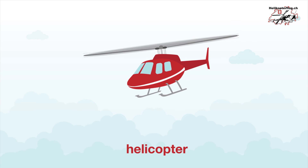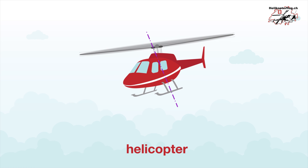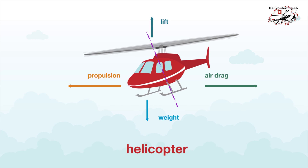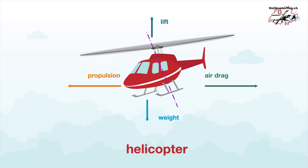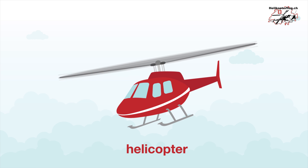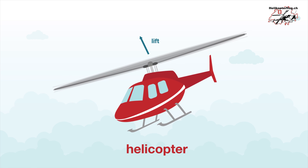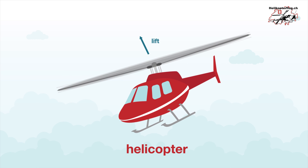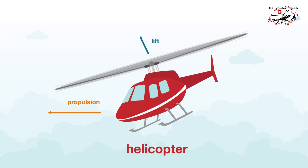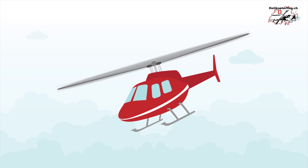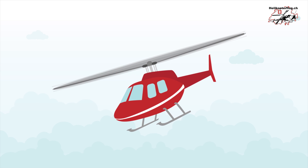To fly forwards, the rotor plane is tilted forward so that the airflow is slightly accelerated backwards. The rotor plane is thereby inclined in the direction in which the helicopter is supposed to fly.